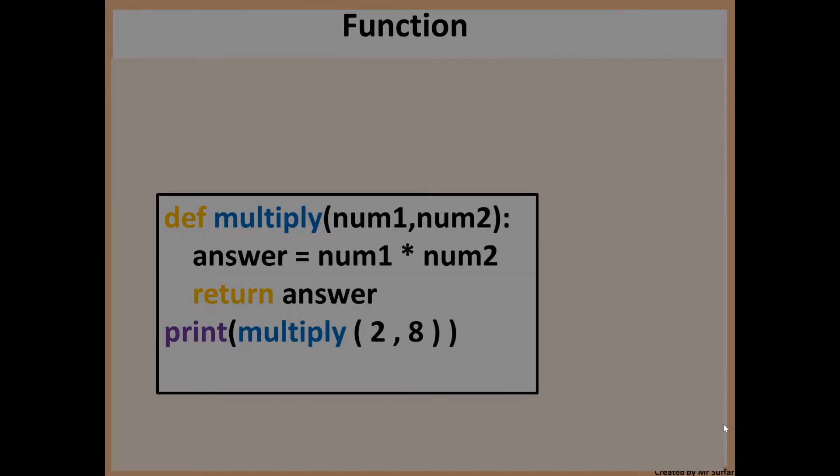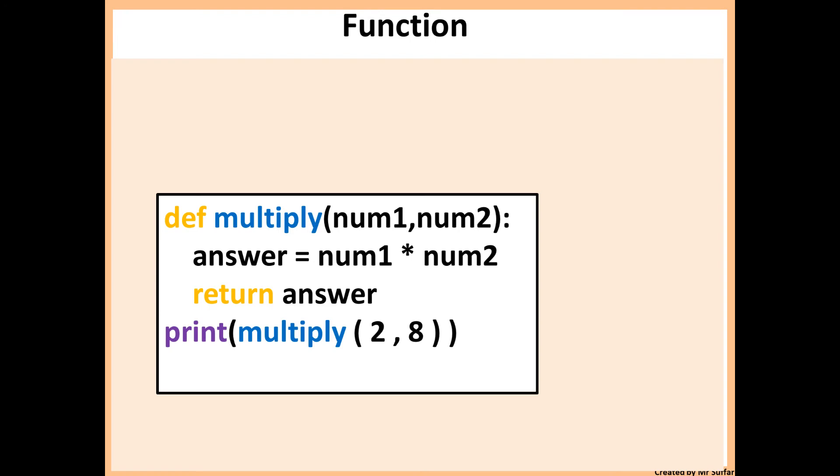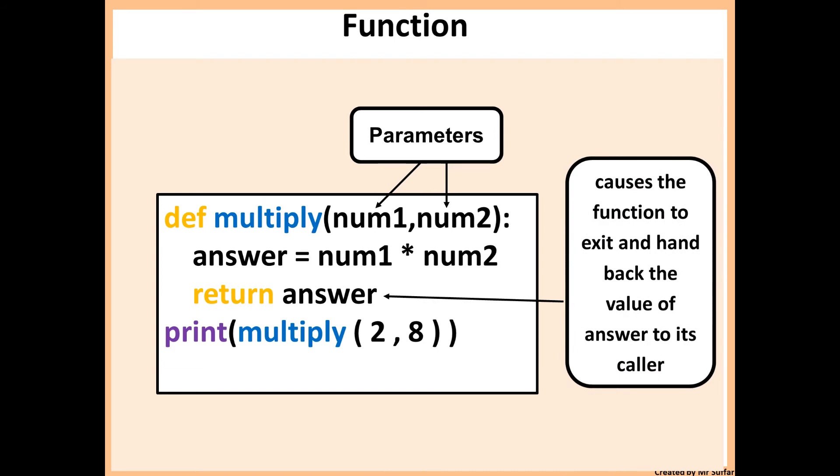Next example, we've got another function. This time it's called multiply. We've got two parameters: num1 and num2, they are the parameters. And then we have return answer. We know it's a function because it has return in it instead of print. It causes the function to exit and hand back the value of answer to its caller.